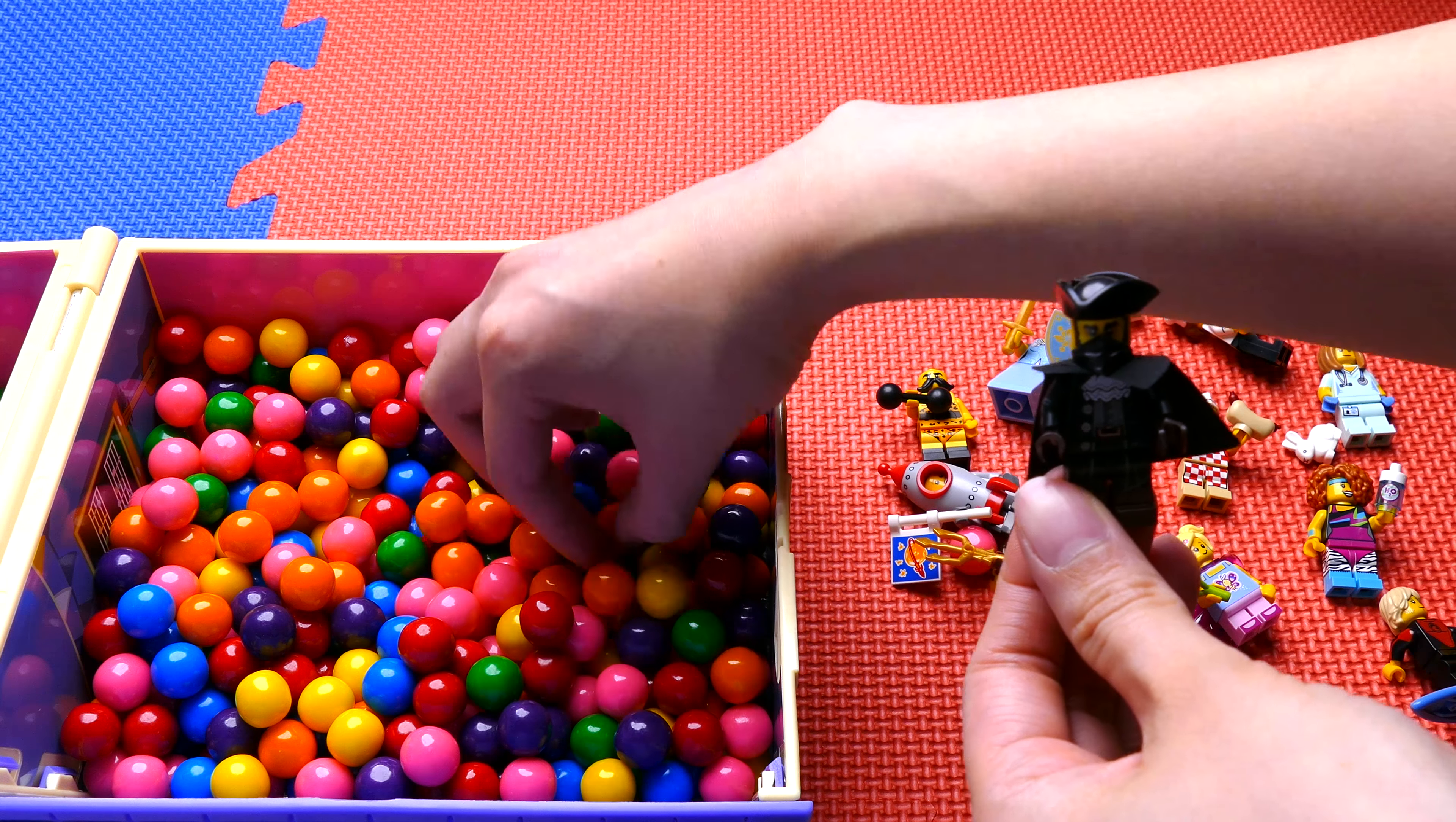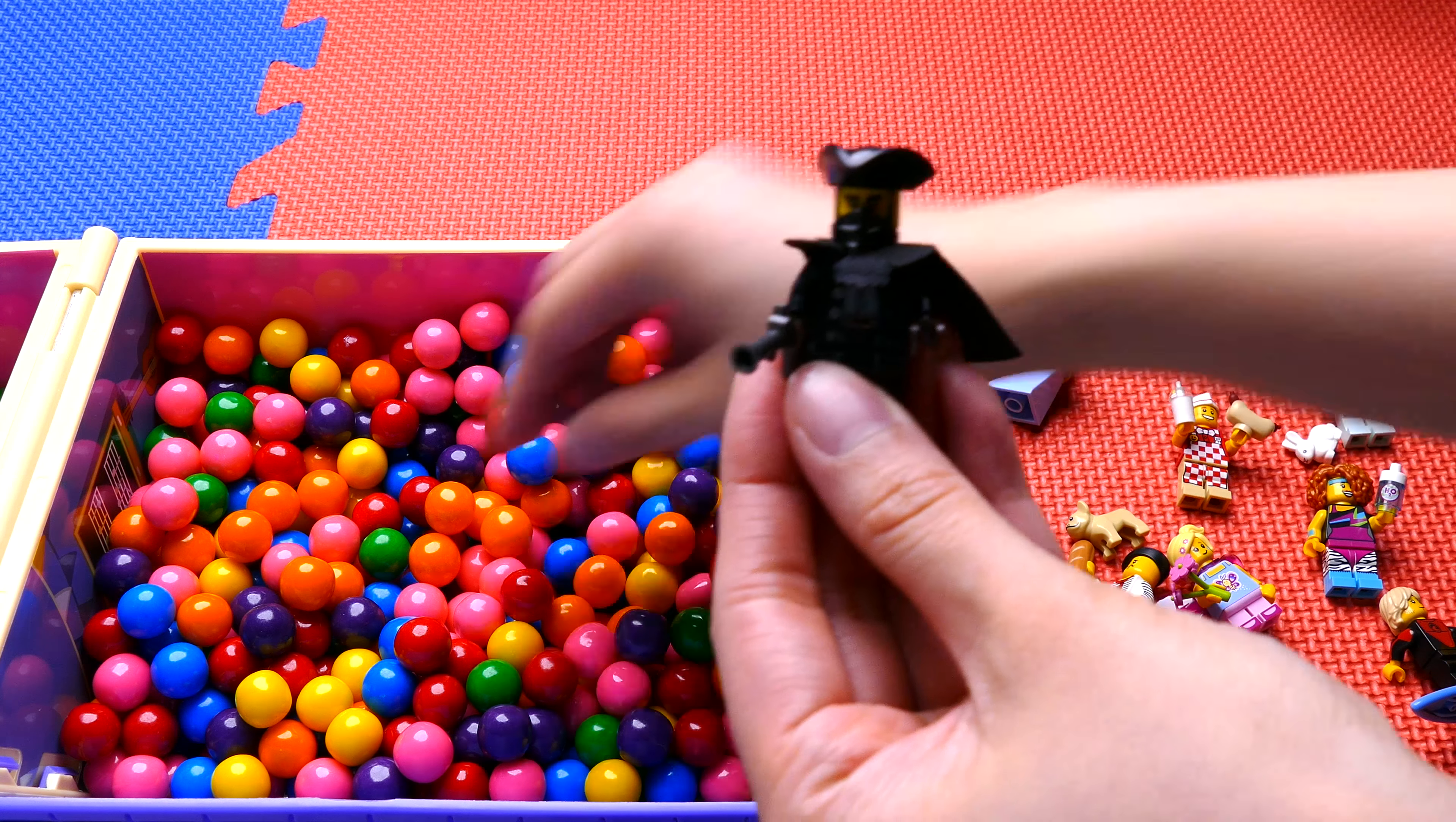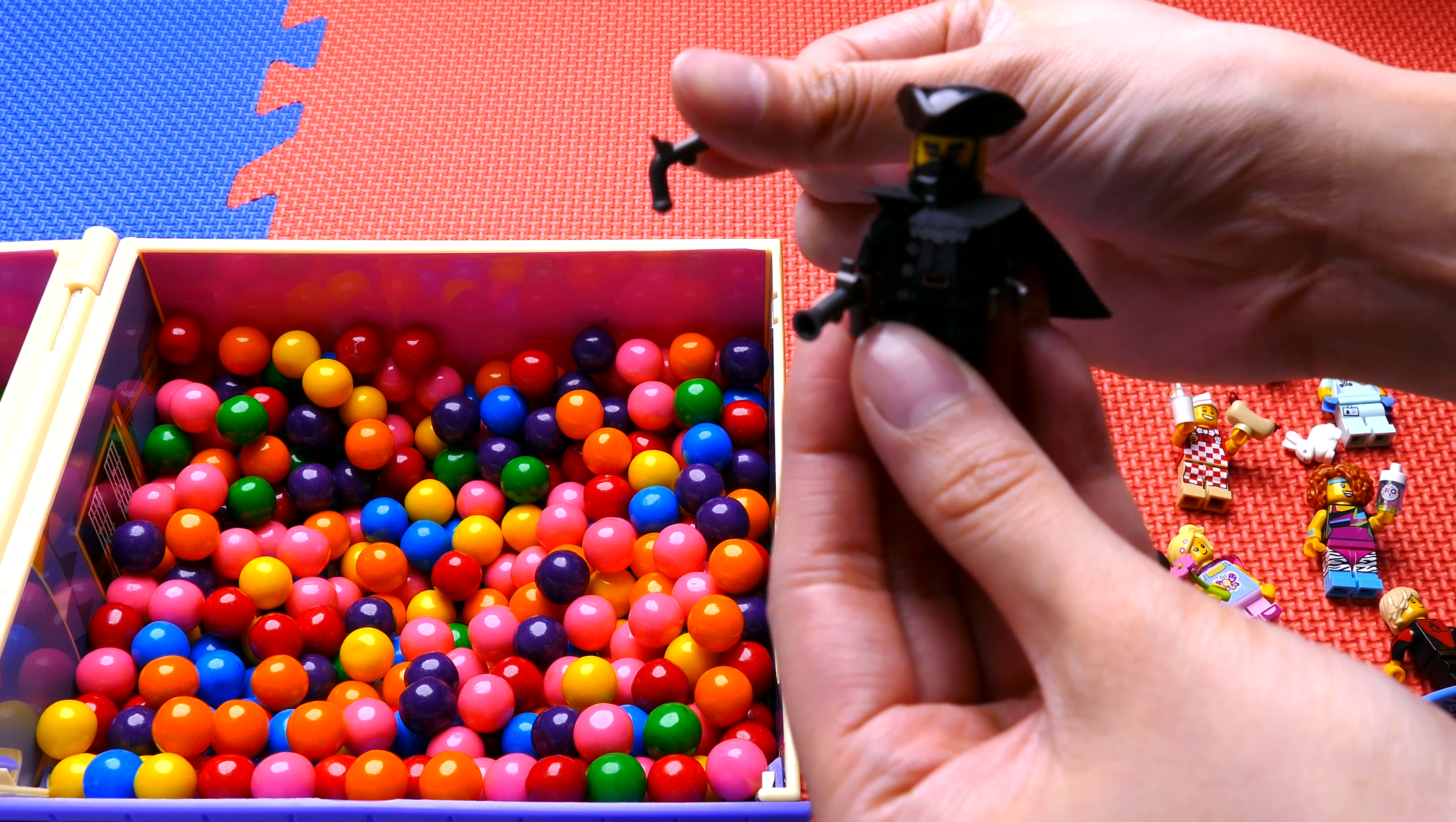Back to Highwayman. Look what we found: one of Highwayman's pistol guns. He has two hands, so there must be another one in here somewhere. And we found it! We found Highwayman's second gun.